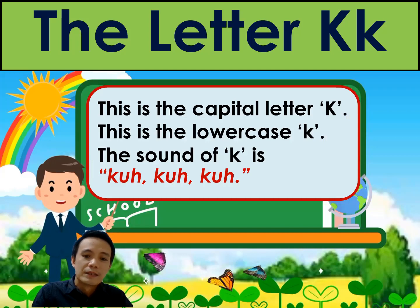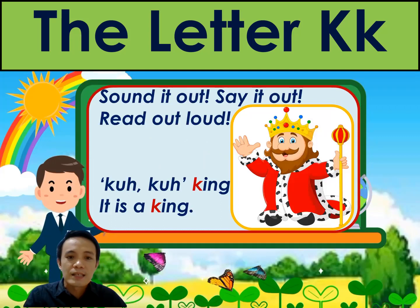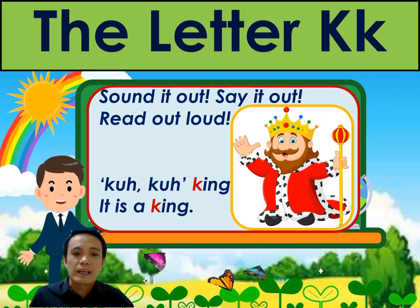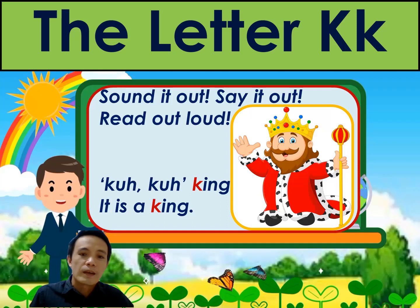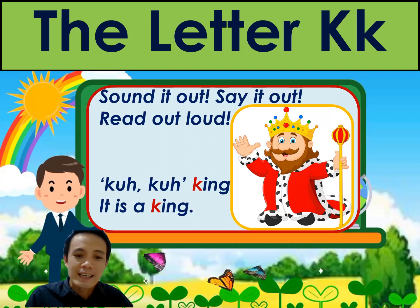Now let's continue. Sound it out, say it out, and read out loud. Look at the picture and tell me what it is. K, k, k — king. It is a king. One more time: K, k, king. It is a king.